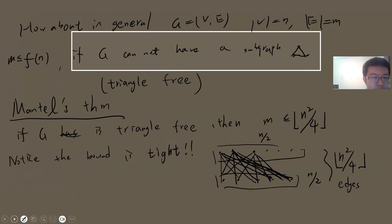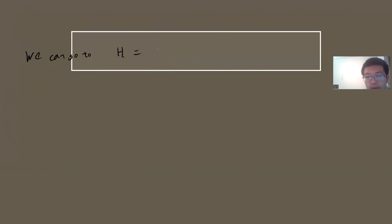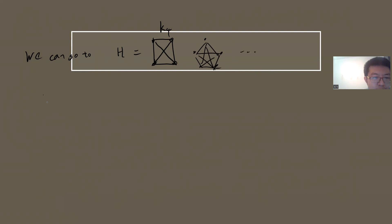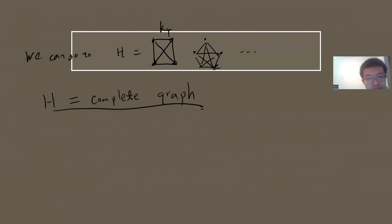So those are two proofs of Mantell's theorem. Next time we can introduce more and go to more exotic graphs — for example, where H is a complete graph such as K4 or K5. We will study the extremal problem when H is a complete graph. See you guys in the next video.